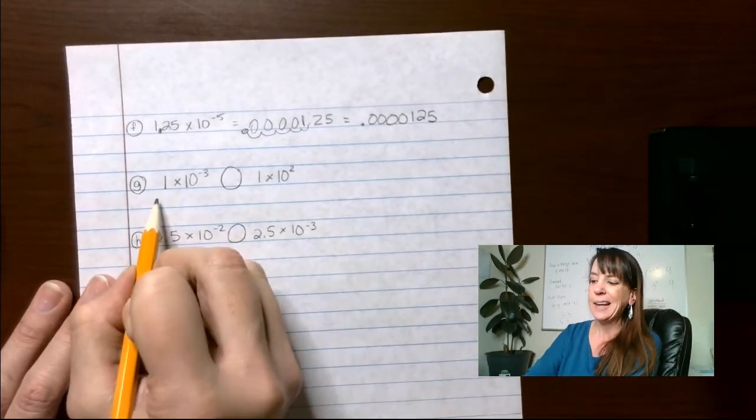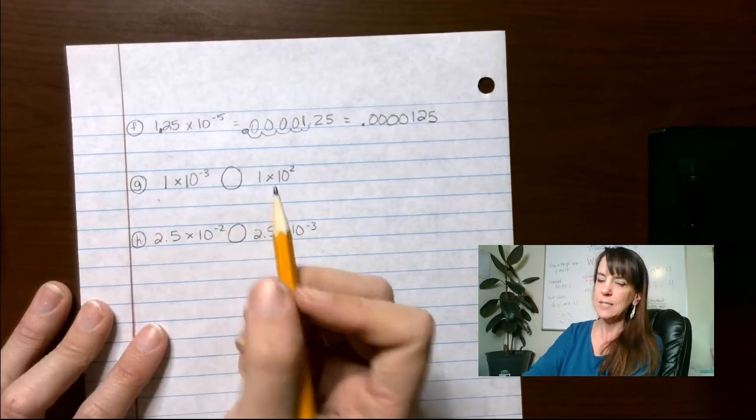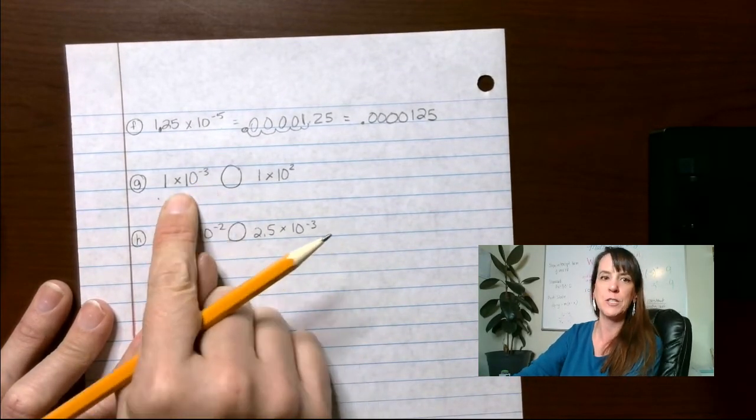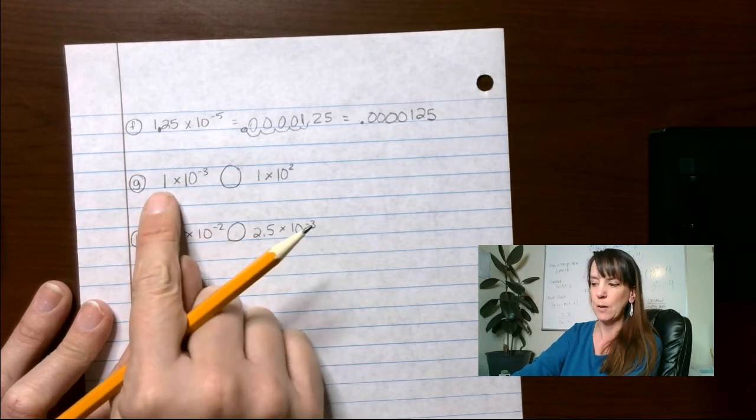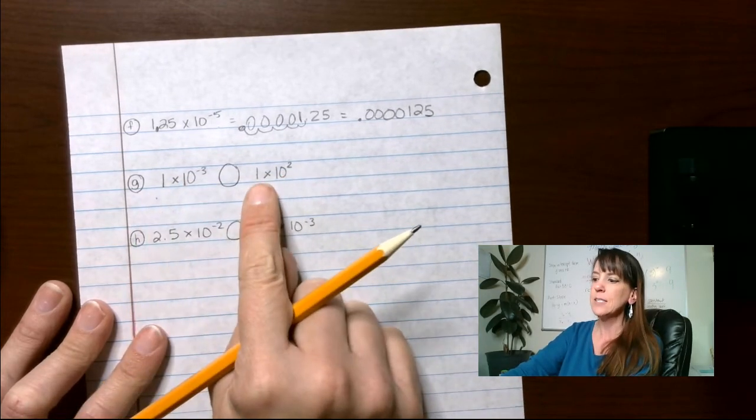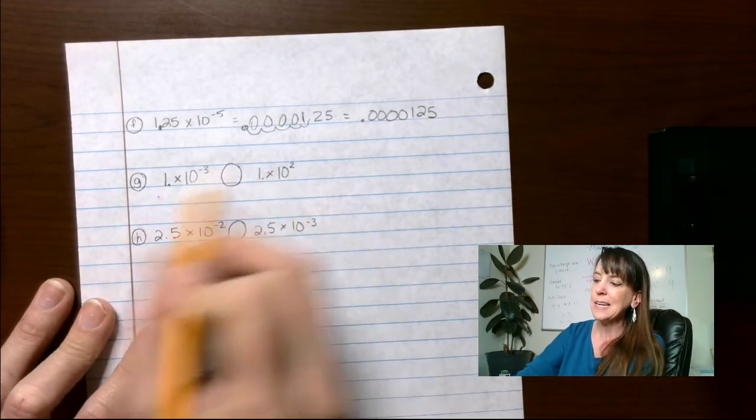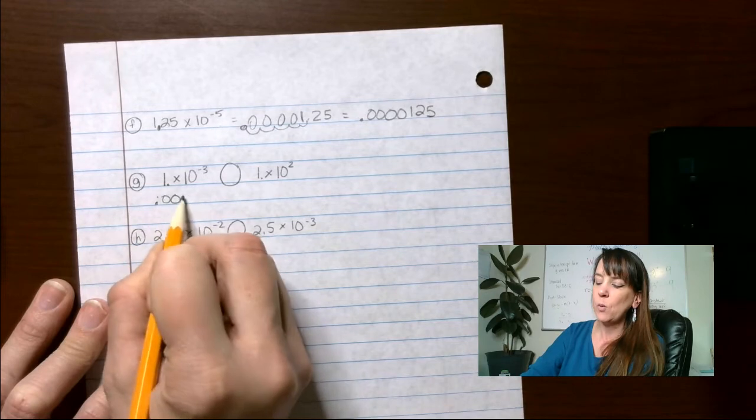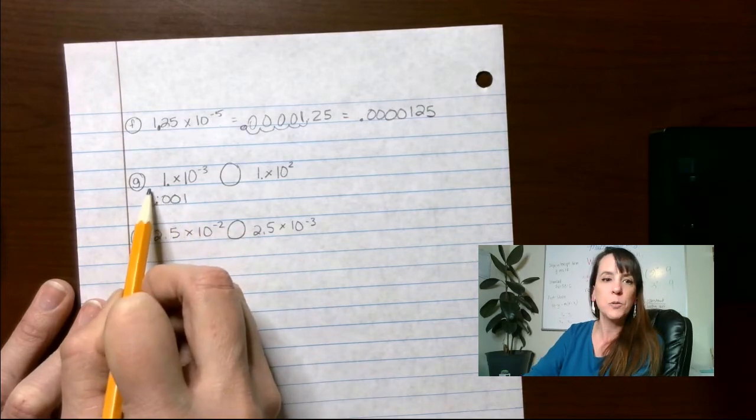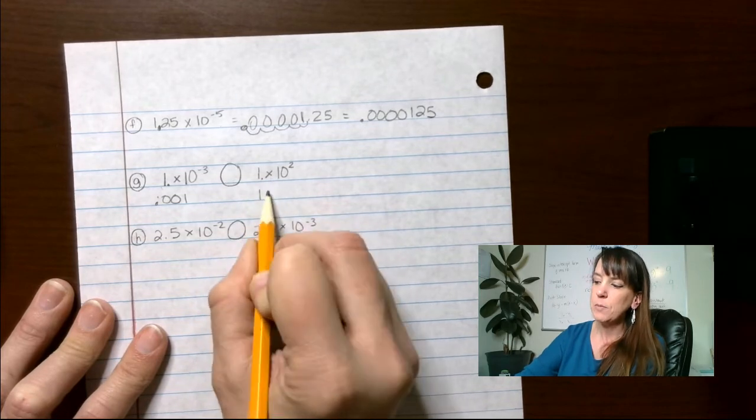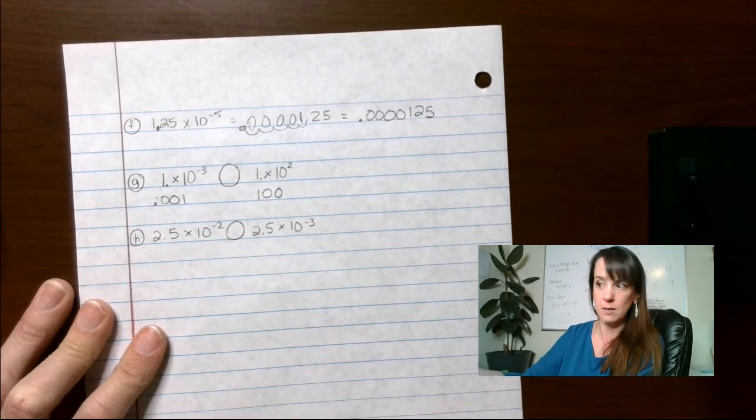We're going to compare these two things. I think it might be helpful until you get the idea of this. In this case, we have a negative 3, which is going to make this smaller. That 1 is going to be smaller, right? This 1 is going to be larger. Both these have the decimals at the end. This is going to be 0.001 because we move that over 1, 2, 3 spots.